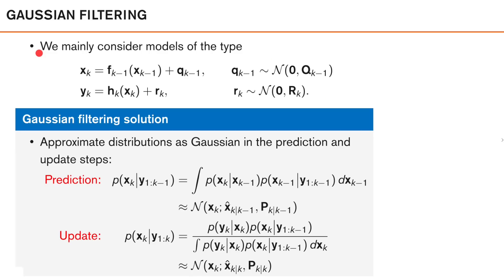In this course, we mainly consider models of the following type. Both the motion model function and the measurement model function are possibly non-linear functions, but the noise components are additive and Gaussian. It is straightforward to generalize these methods to non-additive Gaussian noise, but we will not cover that here. In many cases, we will also drop the time indices of f and h, but that is just for notational convenience.